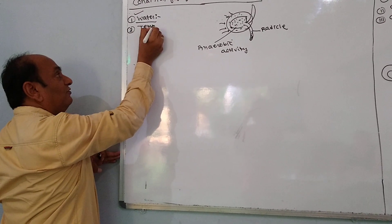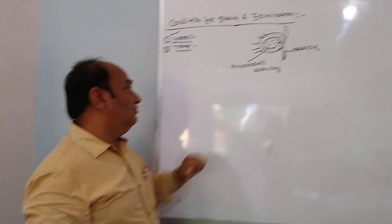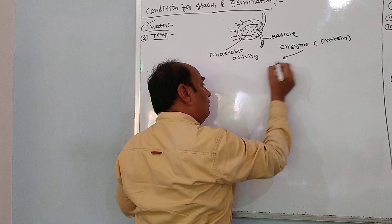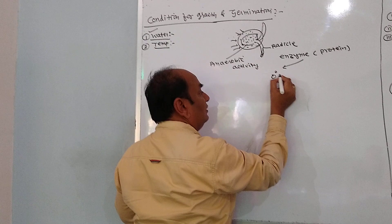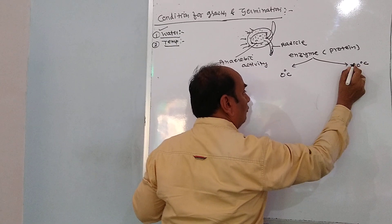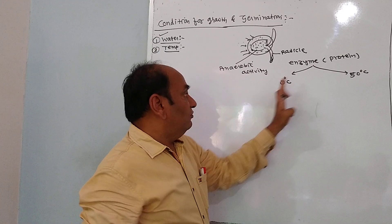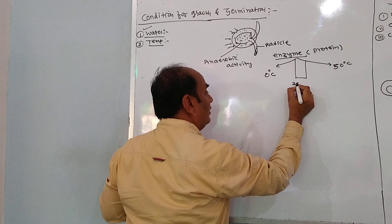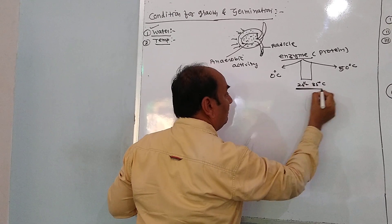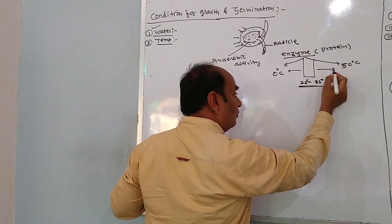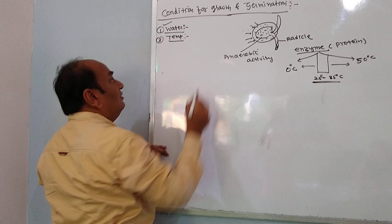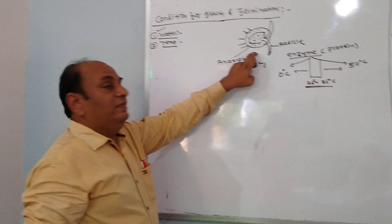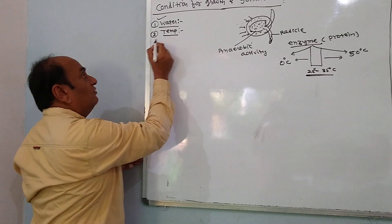The second condition is temperature. Enzymes are basically proteins. They are inactive below zero degrees centigrade and also inactive above 50 degrees centigrade. Enzymes work optimally in the range of 25 to 50 degrees centigrade. If the temperature is too cold, germination is not possible because enzymes are not working. At moderate temperature, seeds germinate speedily.